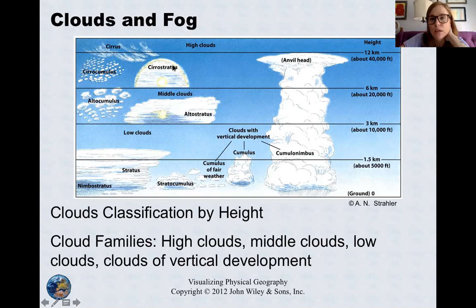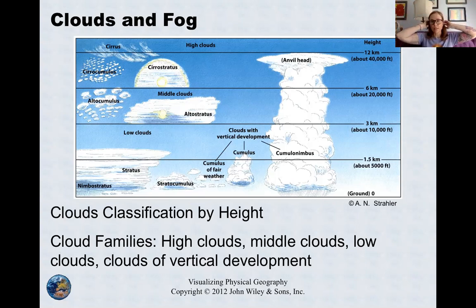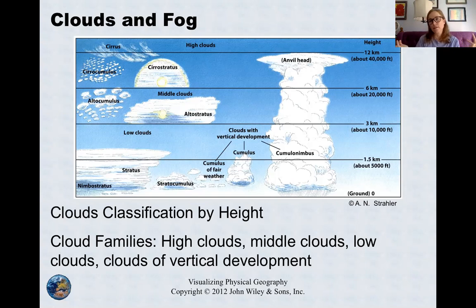We put together the shape and the height. So alto cumulus would be a mid-level fluffy cloud — cumulus means pile, so alto cumulus is your mid-level fluffy cloud. You know, you're at a picnic lying down looking at the clouds with your partner trying to see shapes in them.